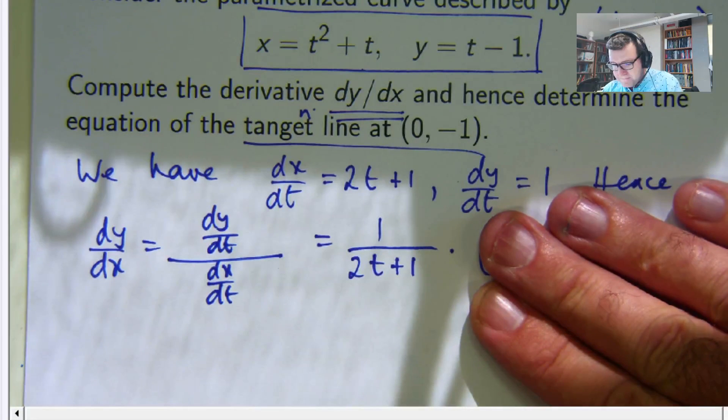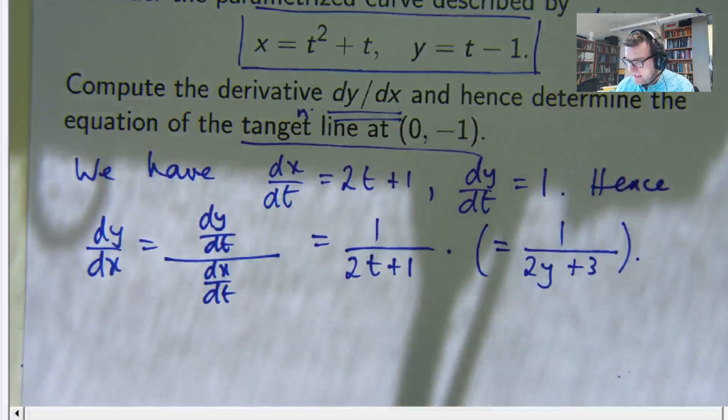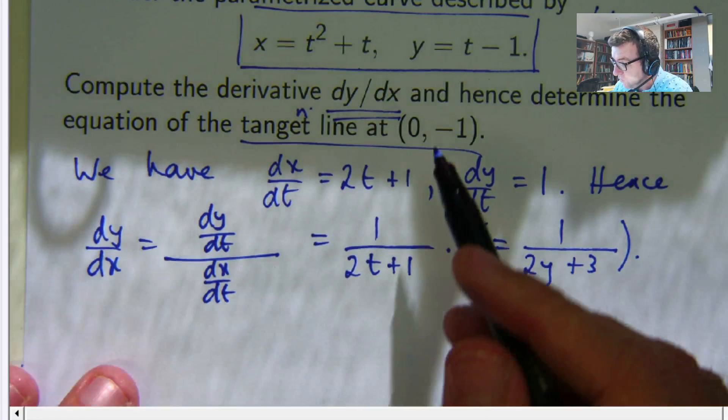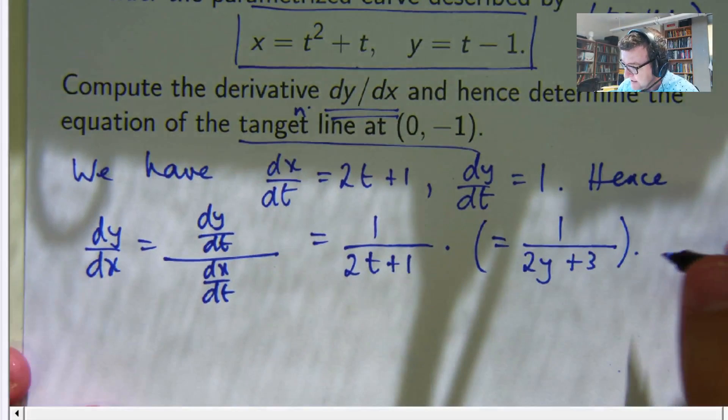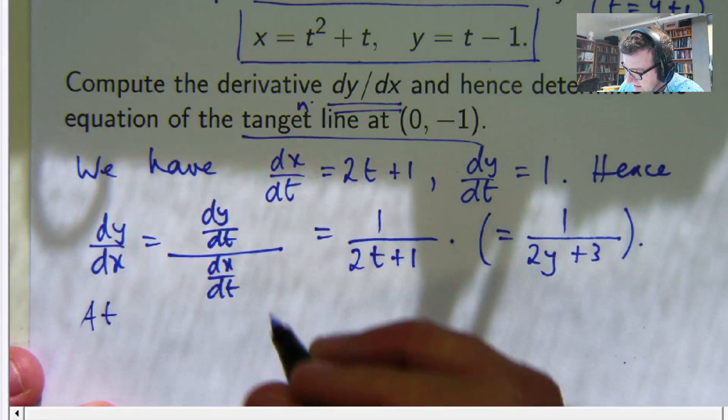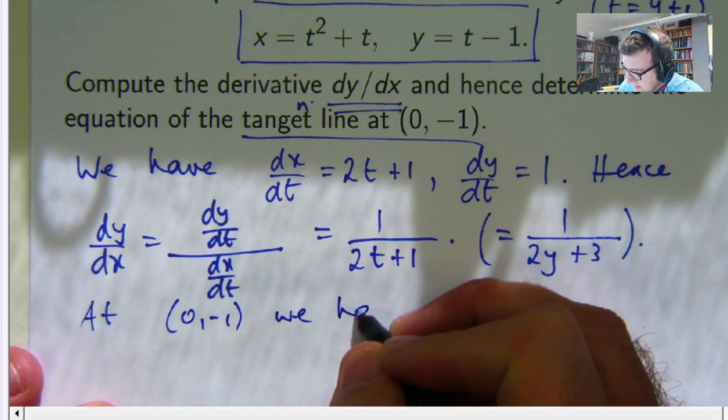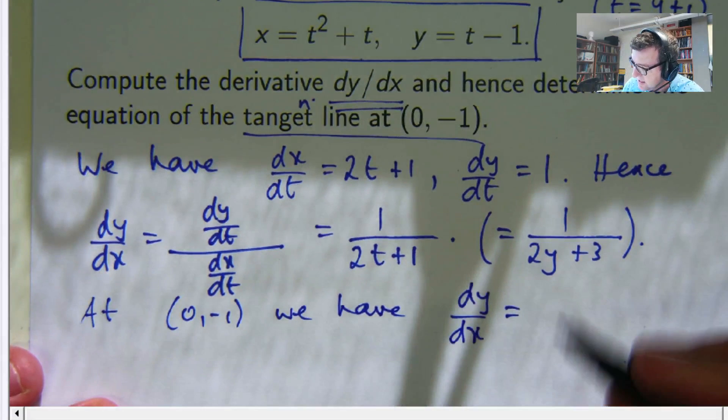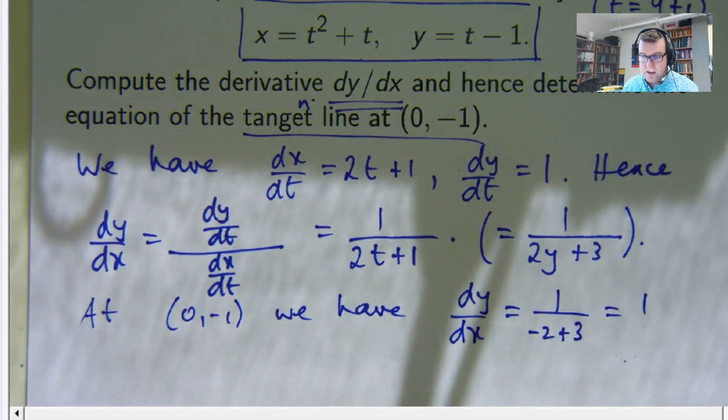Sorry, by plugging in y equals negative 1 and I'll get t equals 0. Alright. So at 0, negative 1, we have dy/dx. So that goes in there. We get 1.